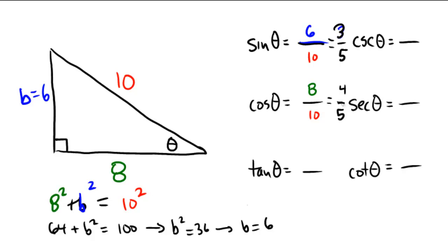For the tangent, we need the opposite over the adjacent. So this time we're going to take a 6 and put that over an 8, based on the fact that the theta is in the bottom right-hand corner. And yet again, this reduces. So that's a 3 over 4.